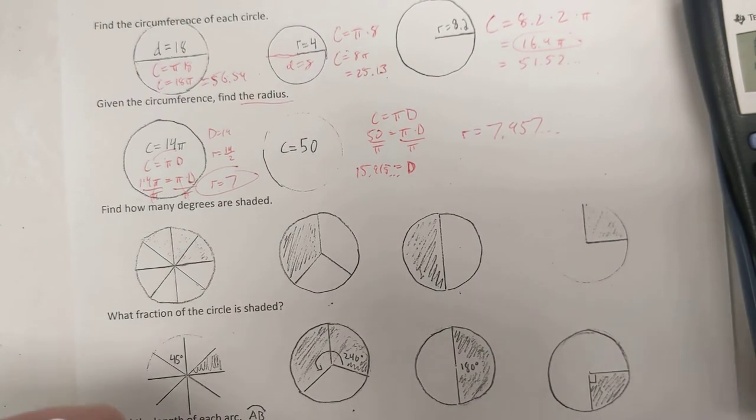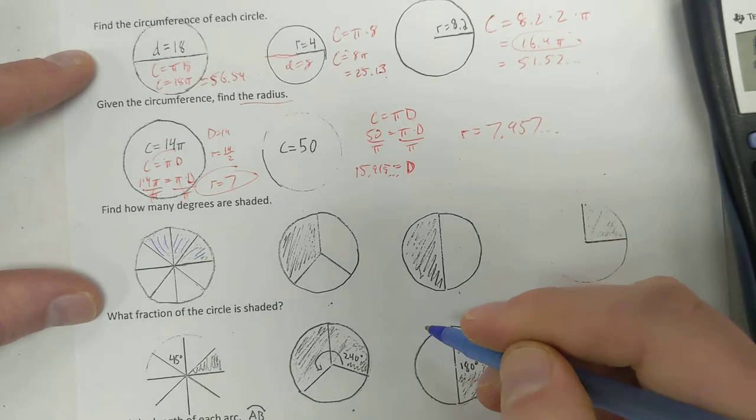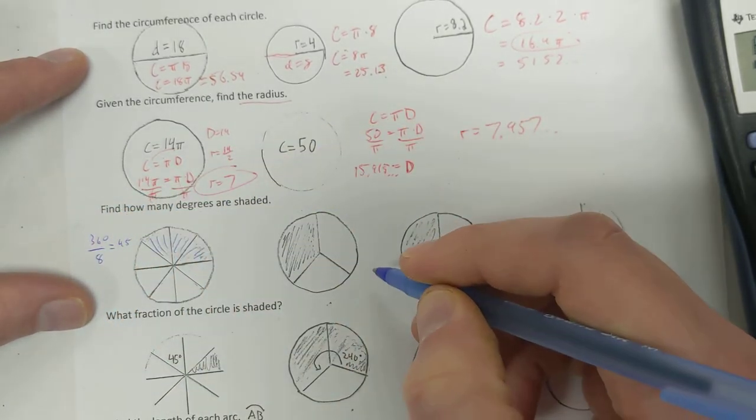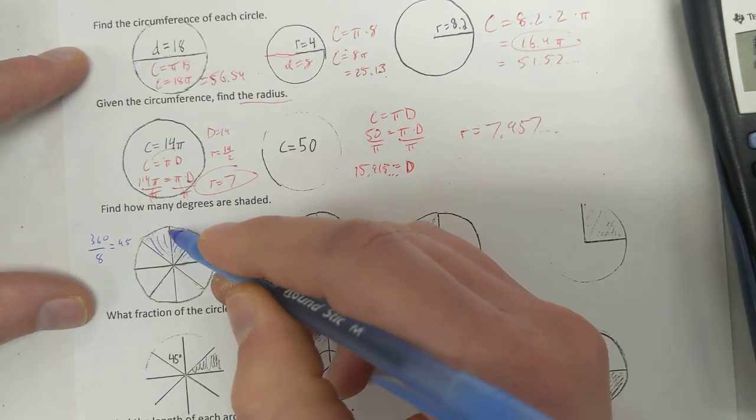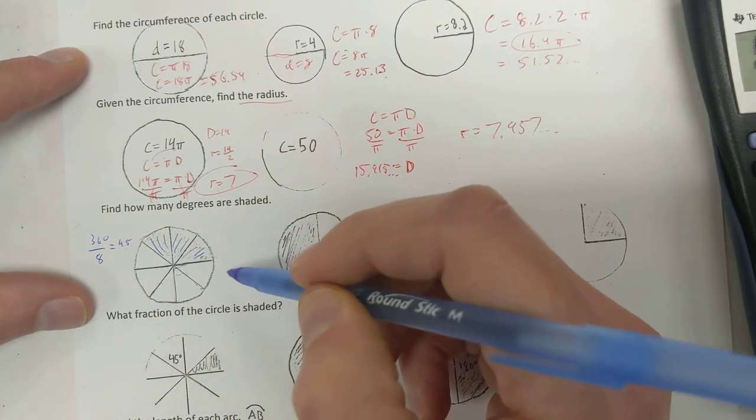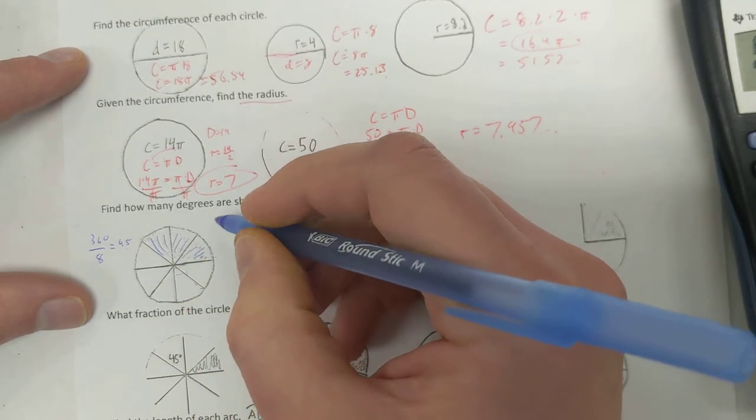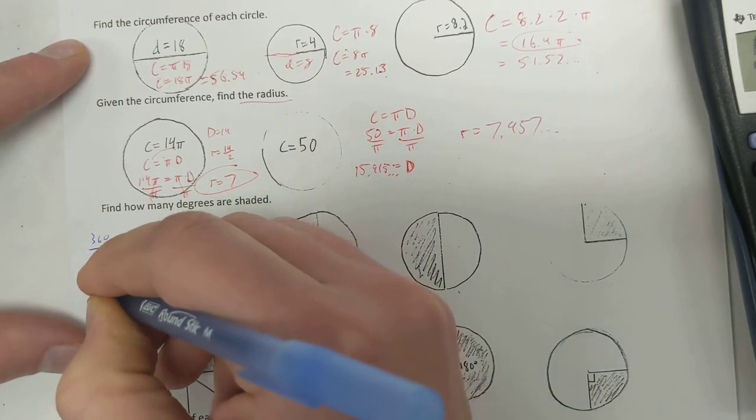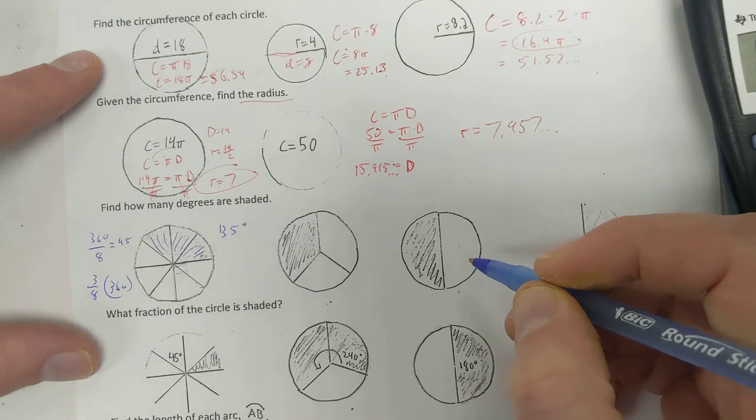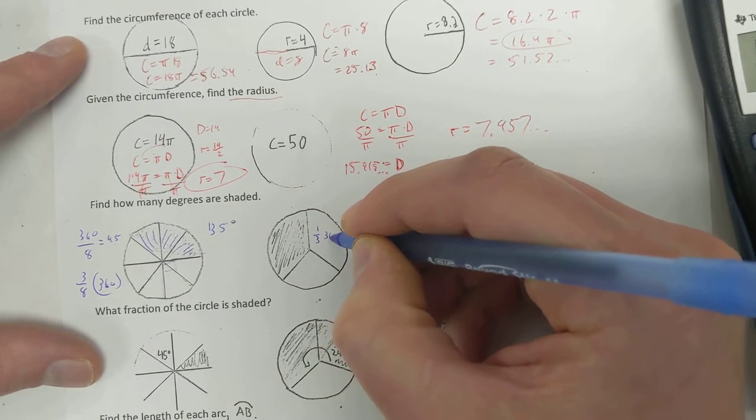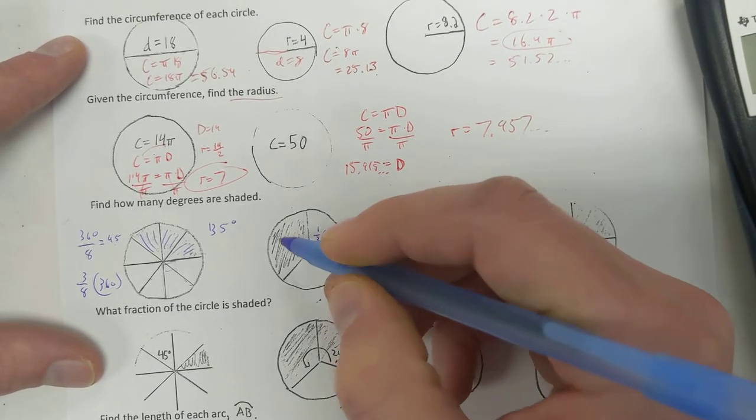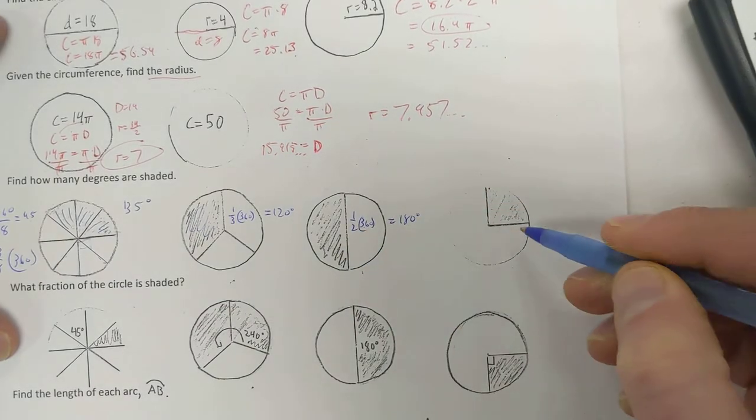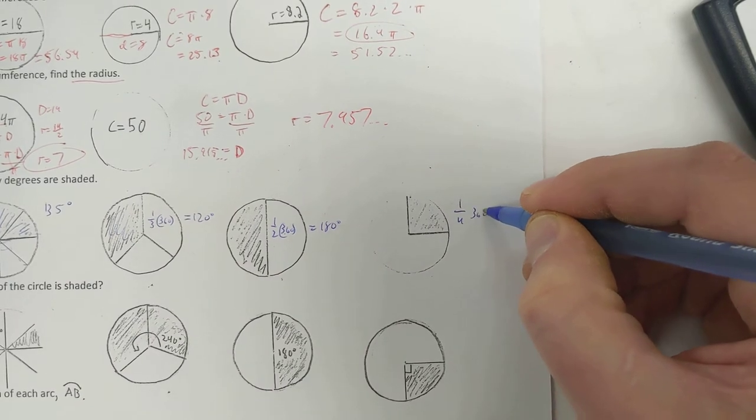How many degrees are shaded? Well, I've got this right here. Each one of these, 360 degrees, there's 8 pieces, divide by 8, that's going to be 45. One of these is 90, half of 90 is 45. So 45 degrees, but I've got three of them. So it's going to be 3 times 45, which is 135 degrees. The other way to do it is just say, hey, 3 eighths of 360. And same thing here, this is going to be 1 third of 360, and that's 120 degrees. 1 half of 360 is 180 degrees. This one you can tell just by looking at it, but 1 fourth of 360 is 90 degrees.